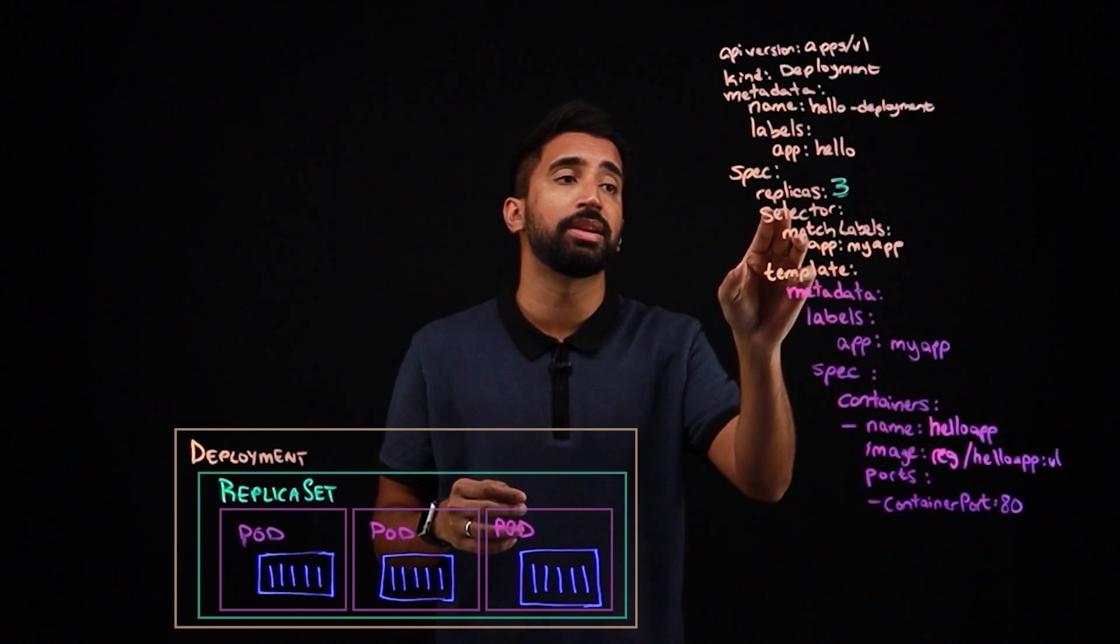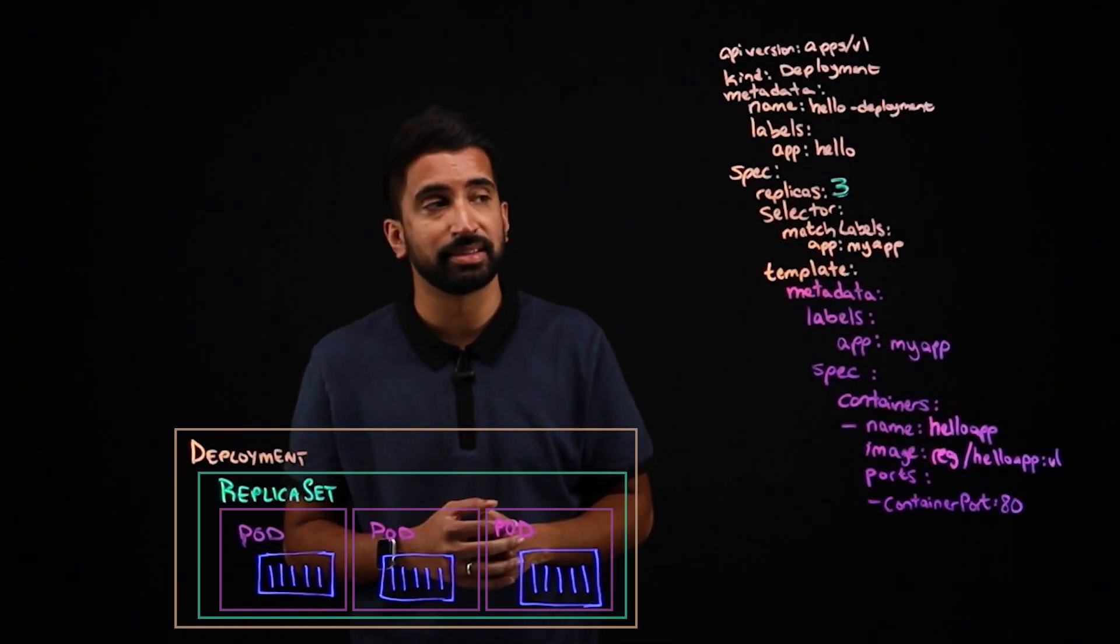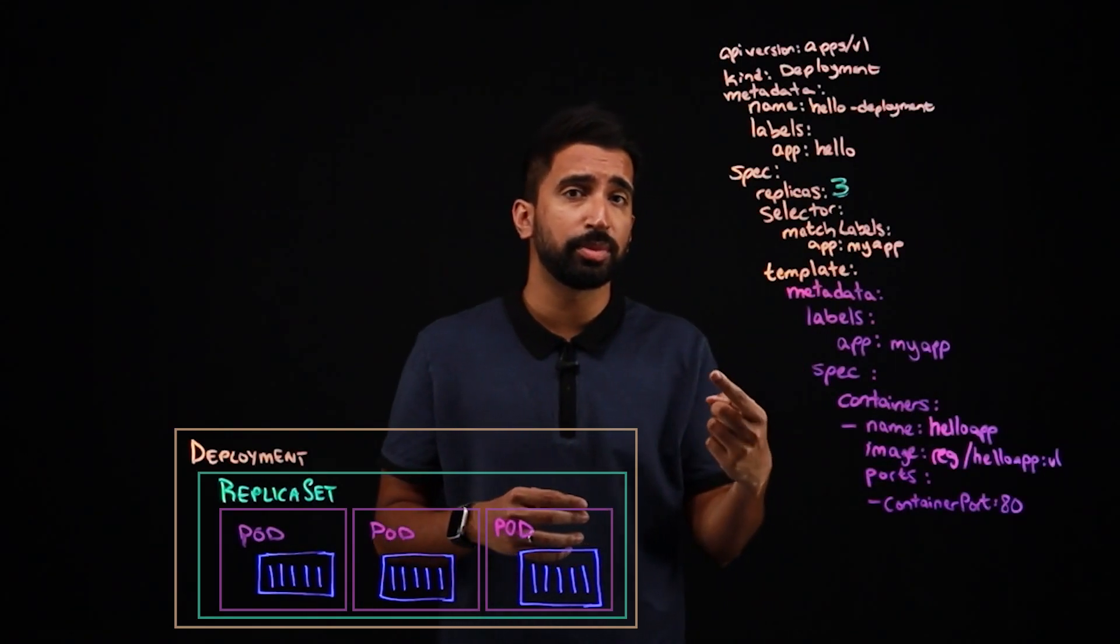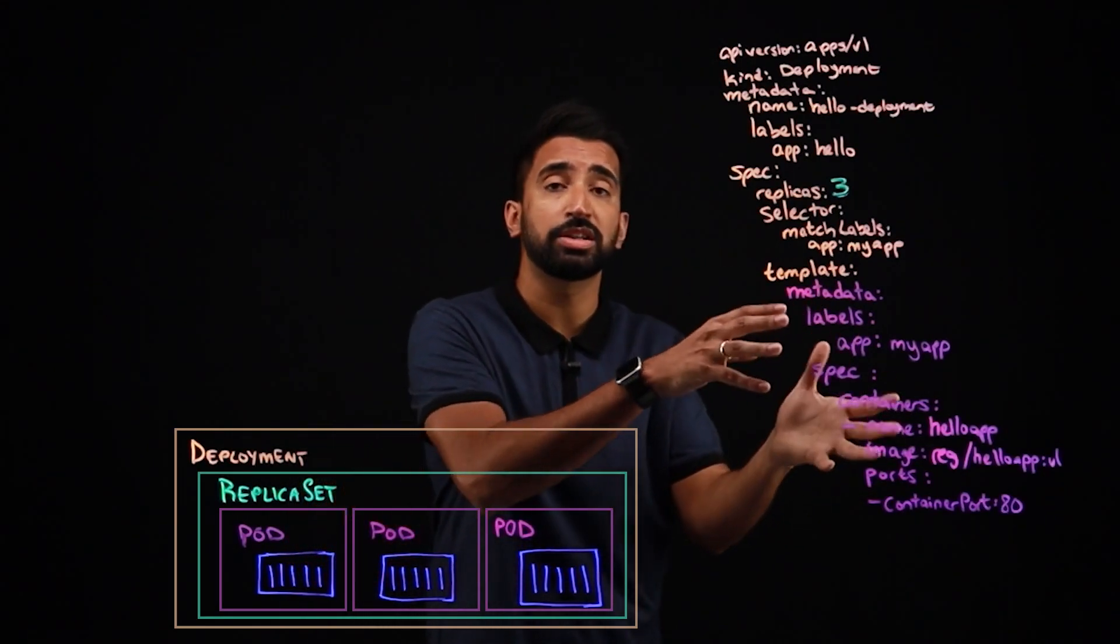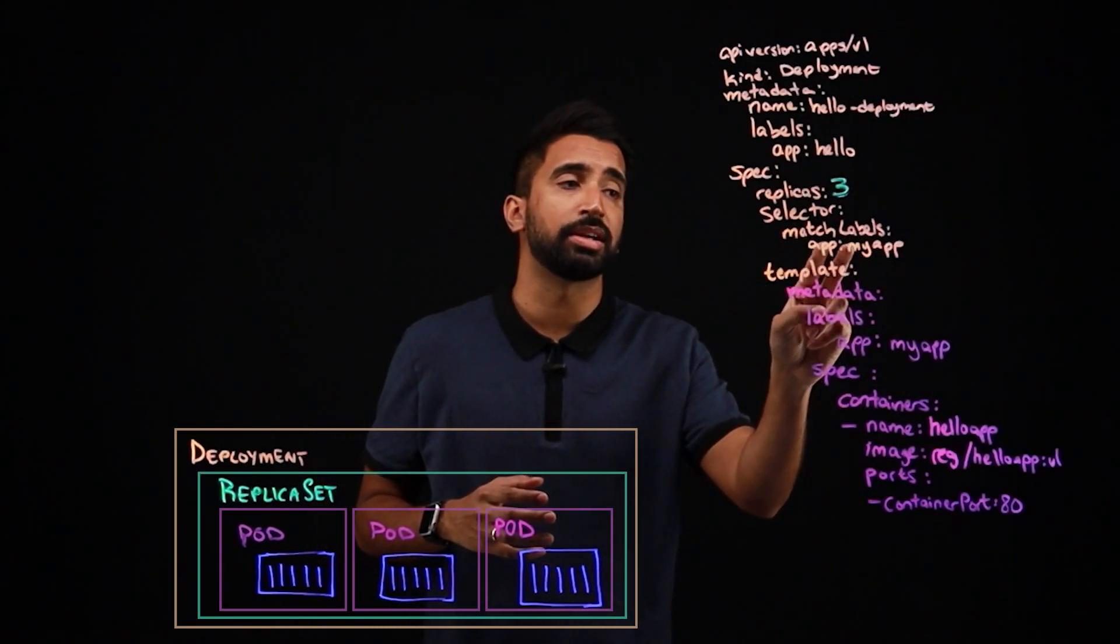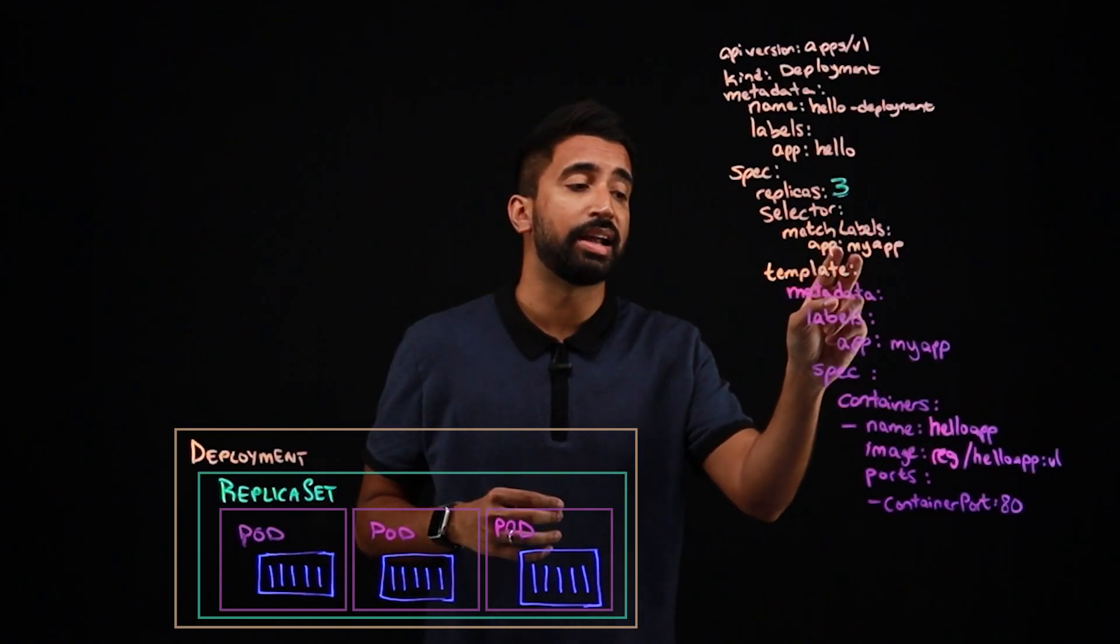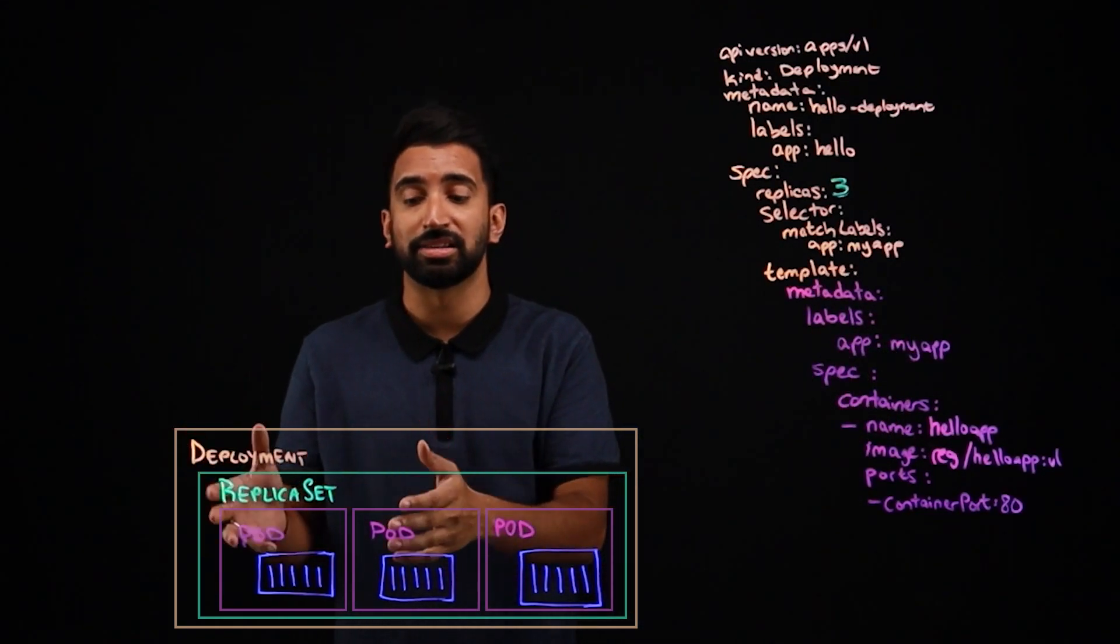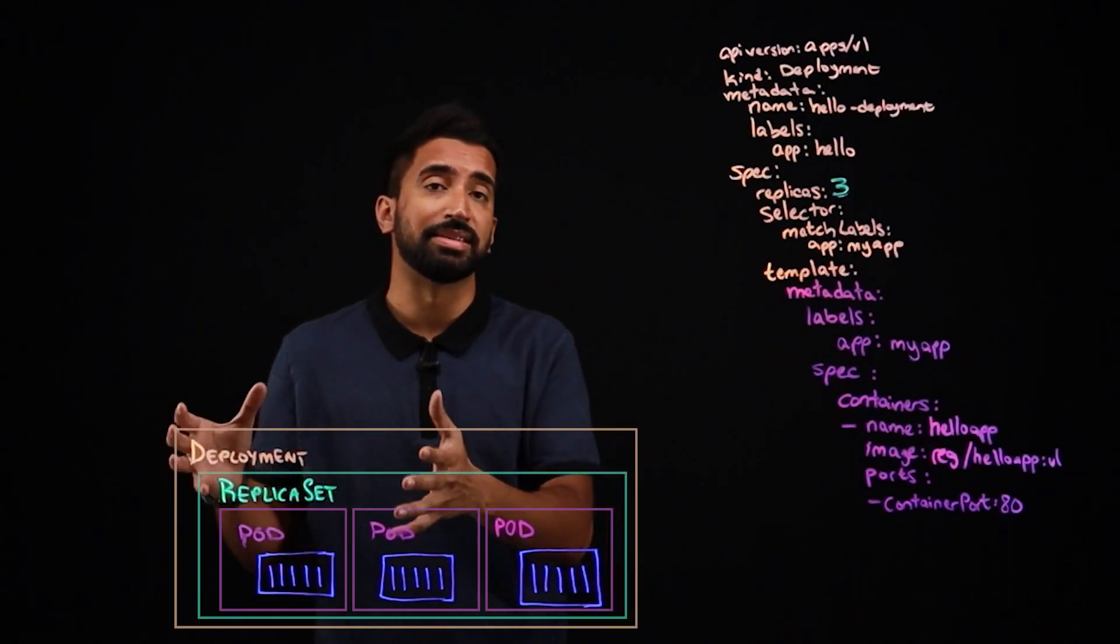And in the spec for the deployment, we're saying we want three replicas. And the selector, this piece is interesting, it tells Kubernetes how to identify which pods fall under the purview of the deployment. So this kind of match labels is going to make sure that it matches any artifact with the labels app colon my app. So that's how Kubernetes knows that these pods belong to this deployment.